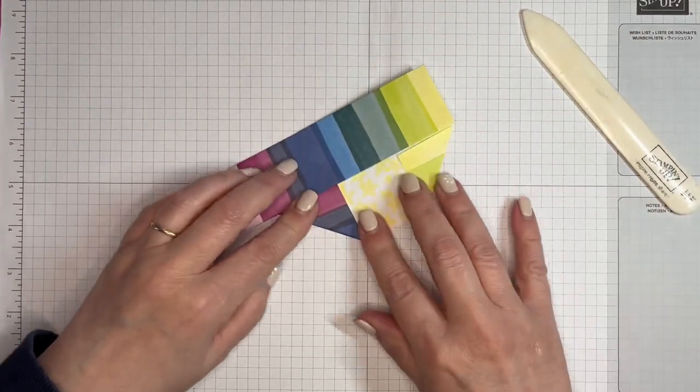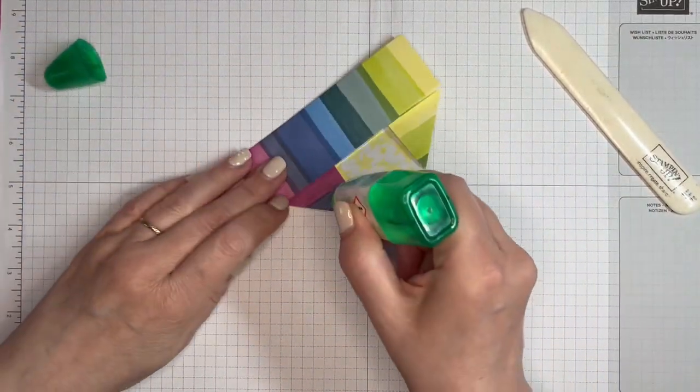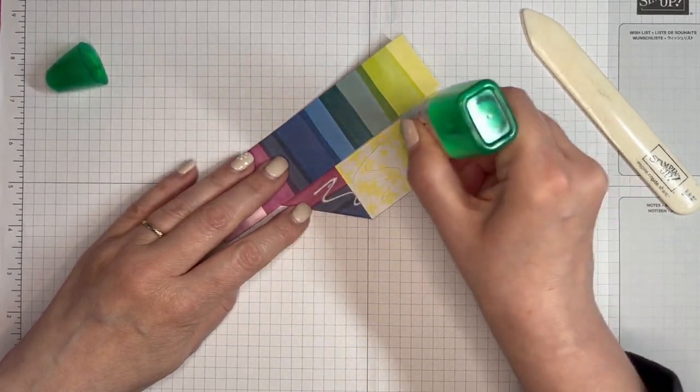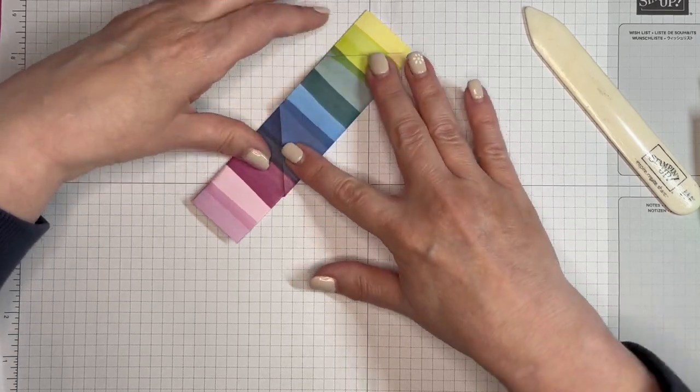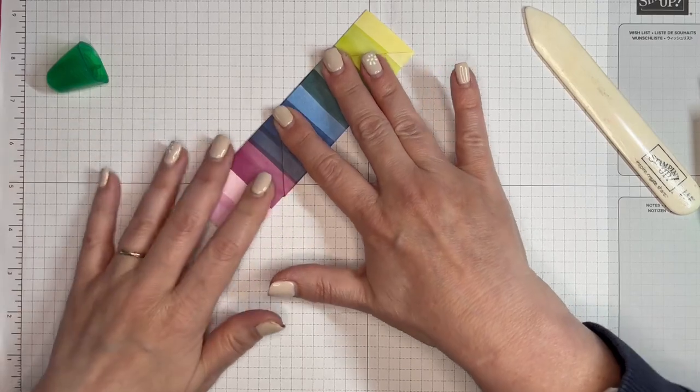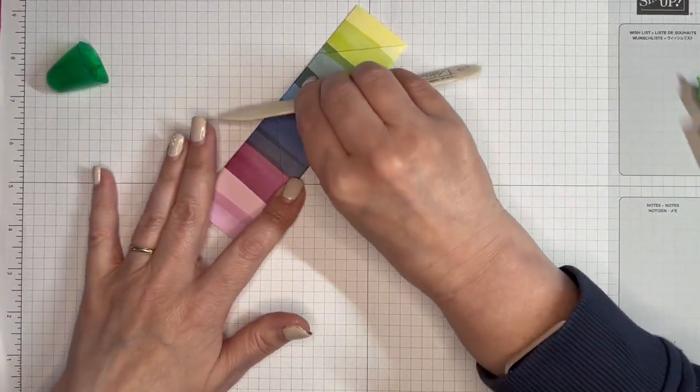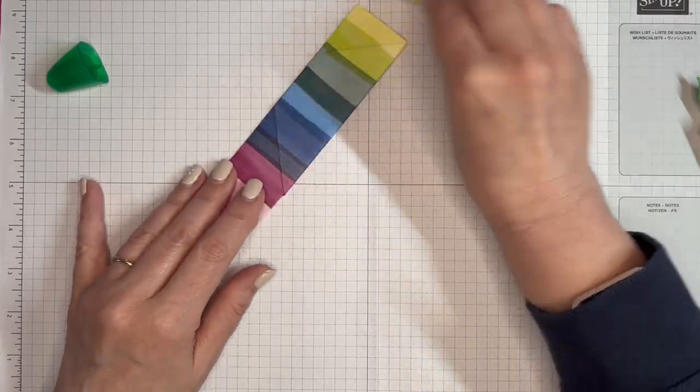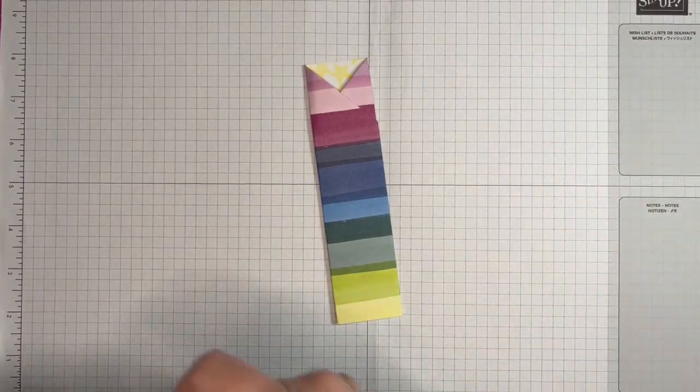And we just need to add some glue to this piece here, fold that over, and stick it down. All right, so that's the actual wrap itself.